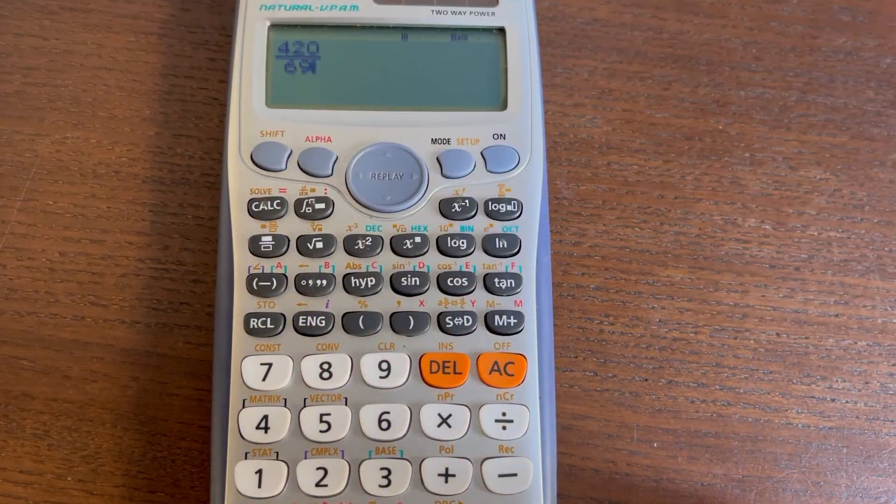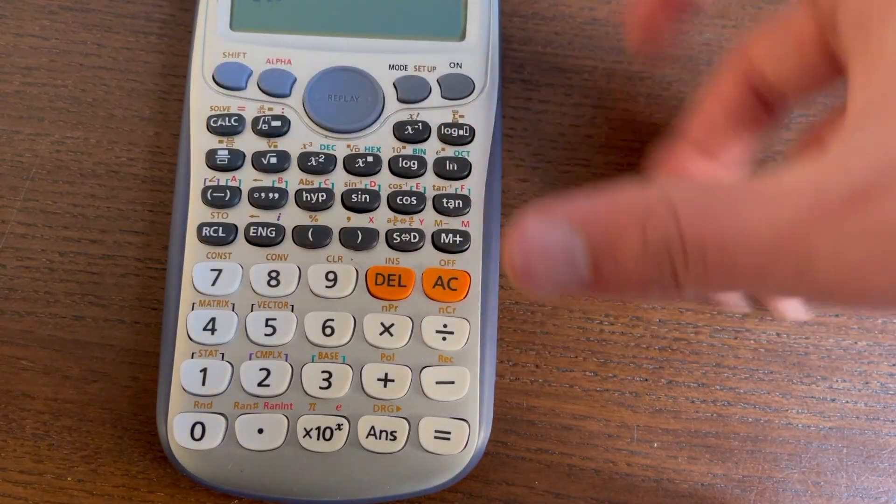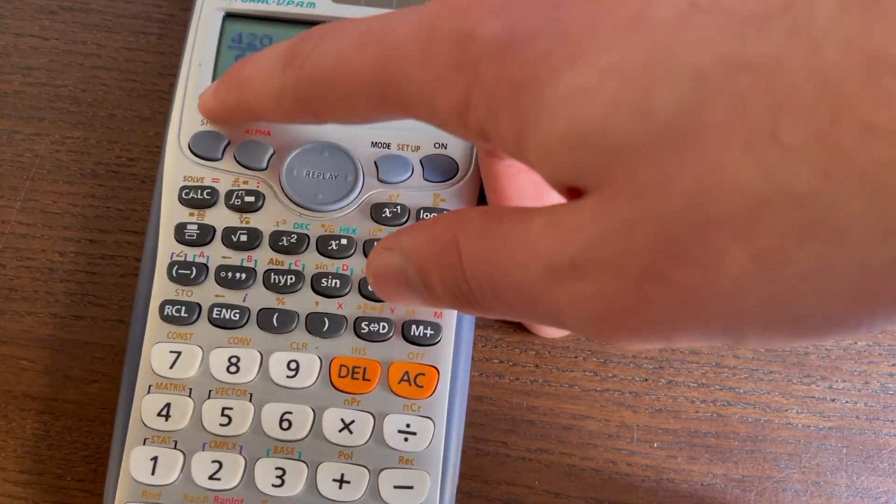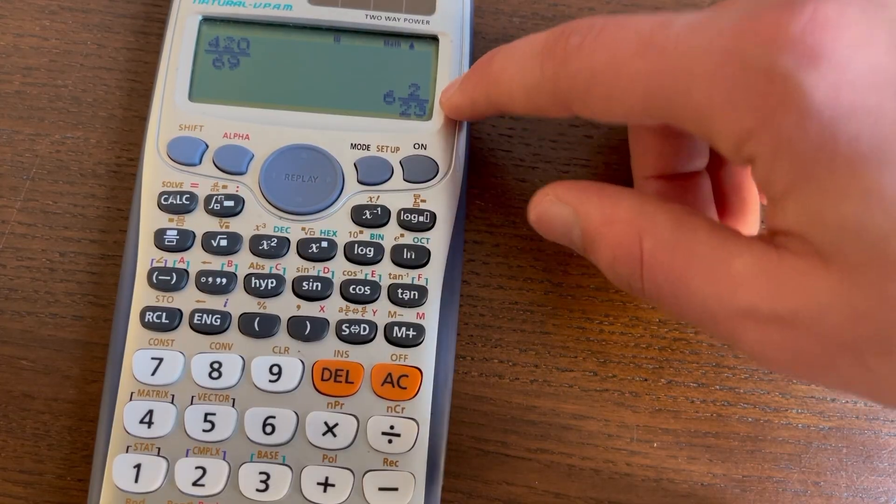If we have a fraction such as this right here, what we can do is we can literally just click shift right here. First we have to click equals to get our proper answer right here, and then we can click shift, and then we can click this button right here, and we get given it as a mixed number.